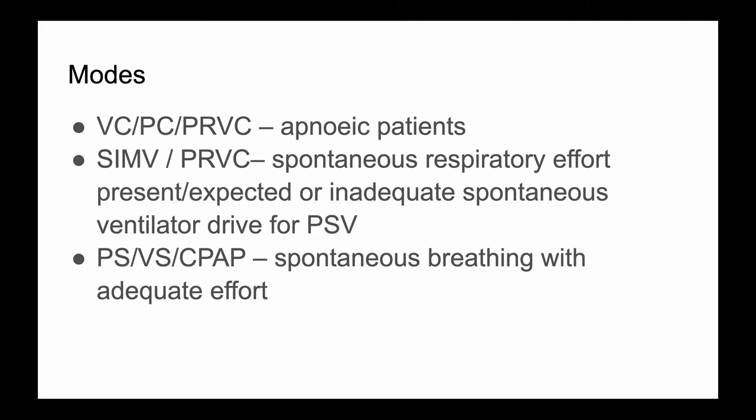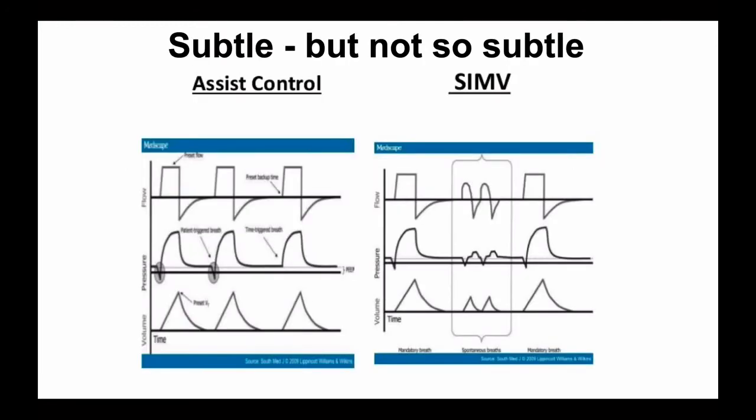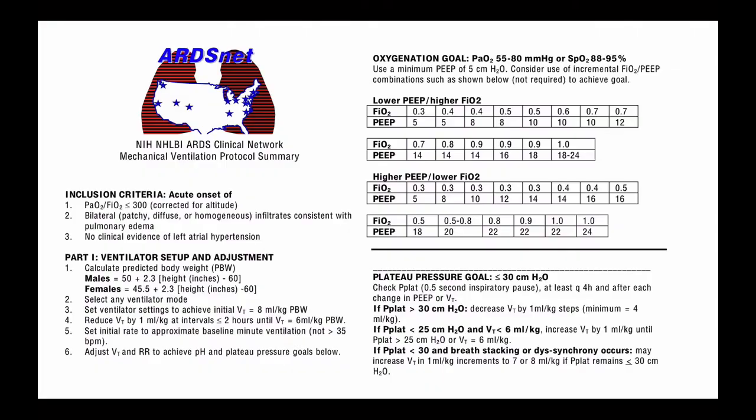Secretly, you can't go wrong with PRVC and pressure support — pressure support for when you want to wean them, PRVC for when you're not weaning. SIMV is not truly spontaneous; it allows spontaneity but will not support you more than pressure support. Assist control or PRVC is spontaneous — whenever you trigger it, it automatically supplements that breath and subtracts it from the total to allow for consistent minute ventilation.